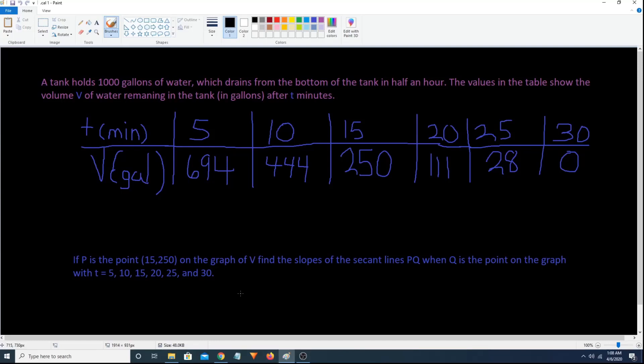A tank holds 1,000 gallons of water, which drains from the bottom of the tank in half an hour. The values in the table show the volume v of water remaining in the tank in gallons after t minutes.